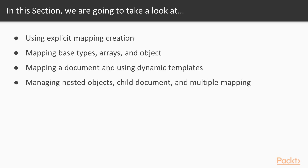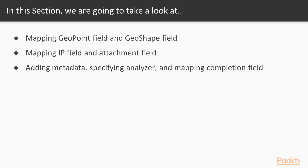In this section, we will explicitly create a mapping. We will also look at the mapping-based types: arrays, objects, and document. We will also see how to manage nested objects and child documents. Then we would add a field with multiple mapping. Later, we will move to mapping a geopoint field, geoshape field, IP field, and attachment field. Lastly, we will see how to add metadata to mapping, specifying different analyzers and mapping completion field.